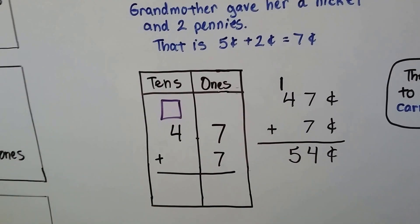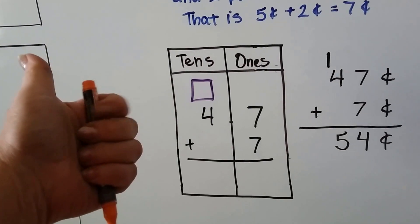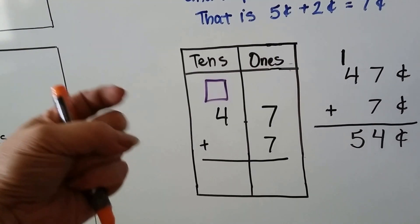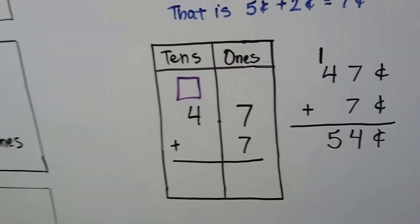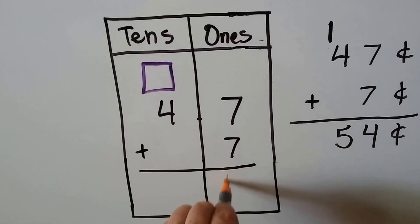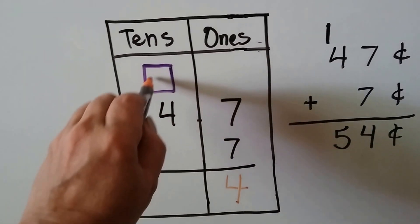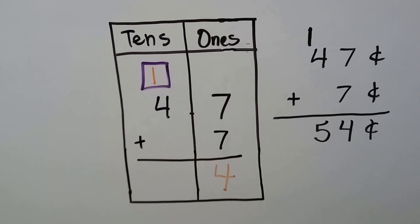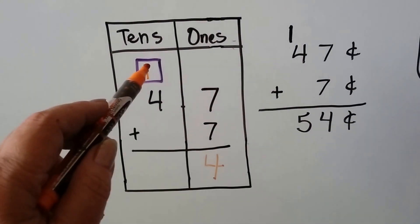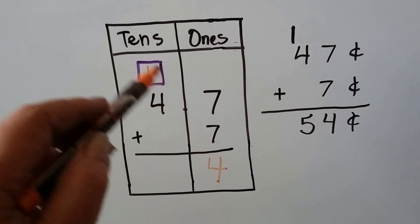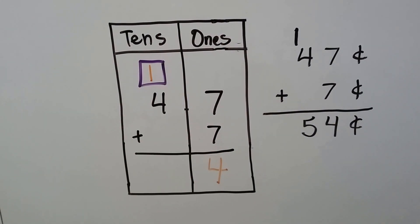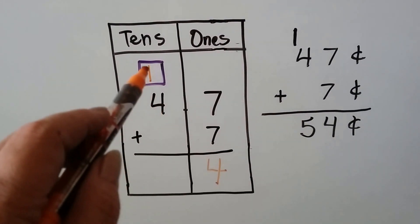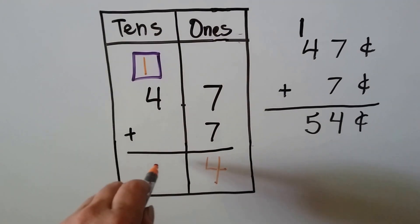7 plus 7 is 7, 8, 9, 10, 11, 12, 13, 14. We put the 4 down here, and we put the 1 for the 10 up here. See? For the 14. So it's like it's split into two different place values. 1, 4. See?